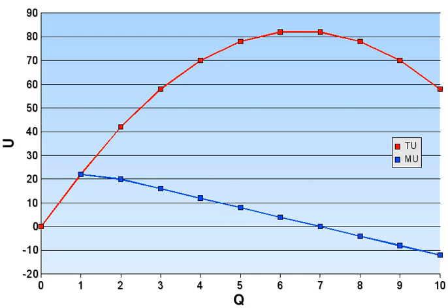The reason why the price of diamonds is higher than that of water, for example, owes to the greater additional satisfaction of the diamonds over the water. Thus, while the water has greater total utility, the diamond has greater marginal utility.